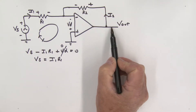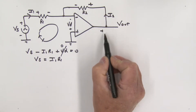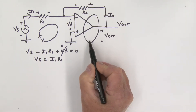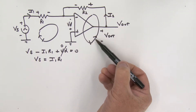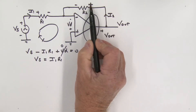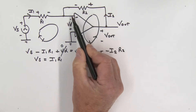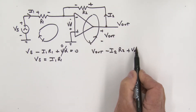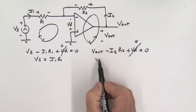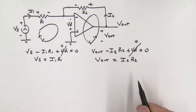Now looking at the output side, at this node we have Vout measured with respect to ground. Taking a loop on the output side: from minus to plus we get plus Vout; across R2 from plus to minus that's minus i2·R2; then plus Vd — and all of that equals zero. Since Vd is zero, this gives us Vout equal to i2 times R2.